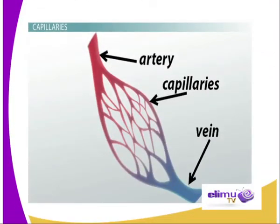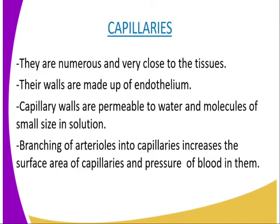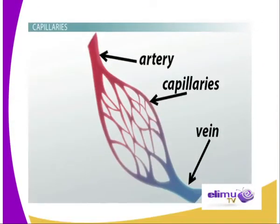We also have a diagrammatic representation of the capillary. You can see it is the capillary branching from the artery. So now we are going to look at the capillaries. They form a very important part of the circulatory system. They are numerous and very close to the tissues in such a way that each cell is near a blood capillary. Exchange of substances between the tissues and the blood takes place across the capillary wall. This is possible due to the fact that the wall of the capillaries is made up of the endothelium, which is only one cell thick.